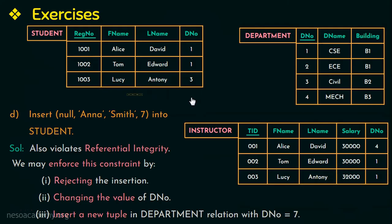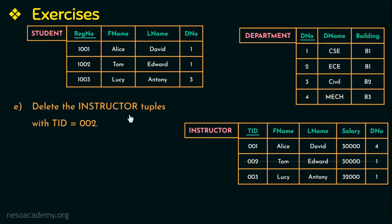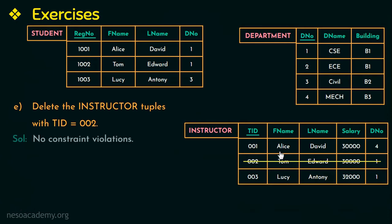The next operation is to delete the instructor tuple with TID equal to 002. With delete operations, only referential integrity can be violated. Since no tuples in any other relation refer to this instructor tuple, referential integrity is not violated. Therefore, the solution is: no constraint violations.